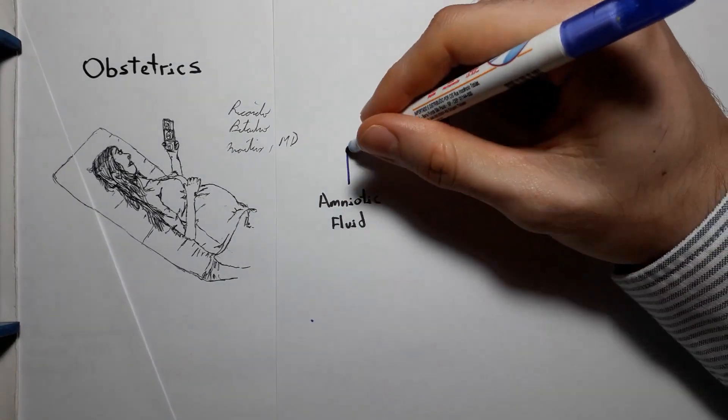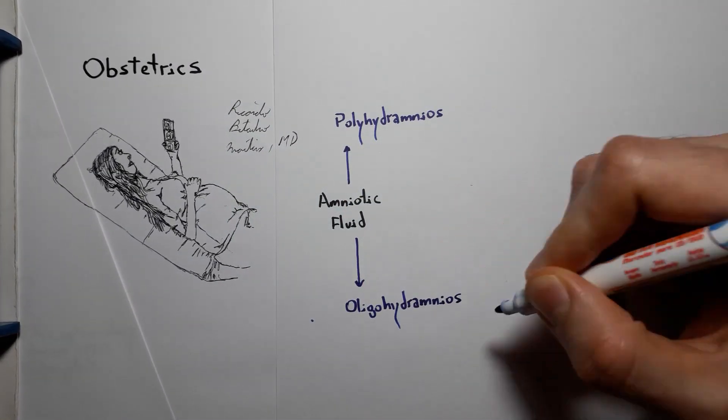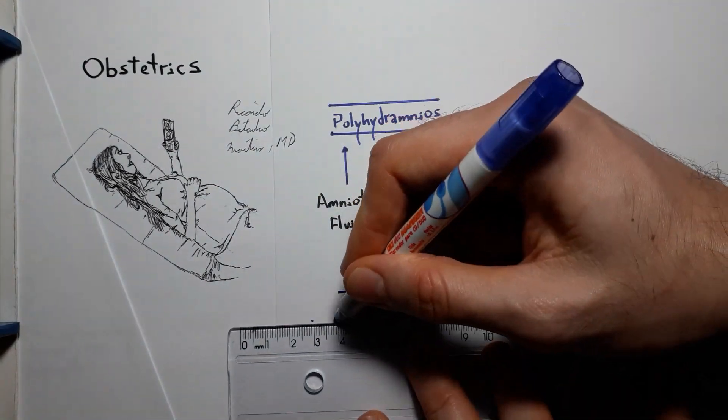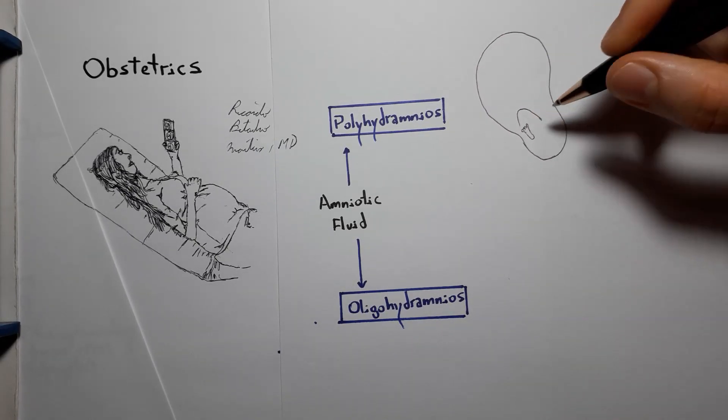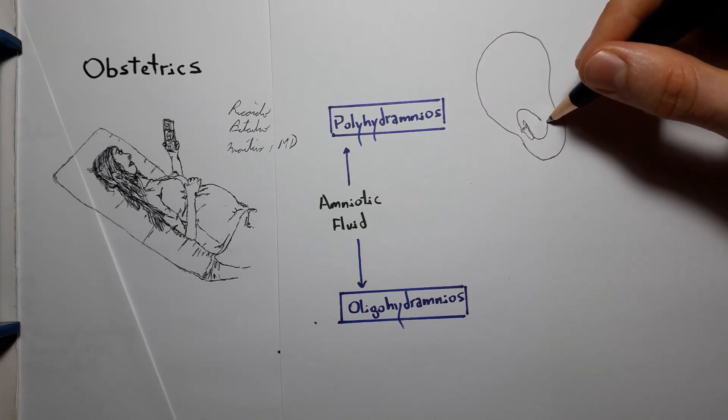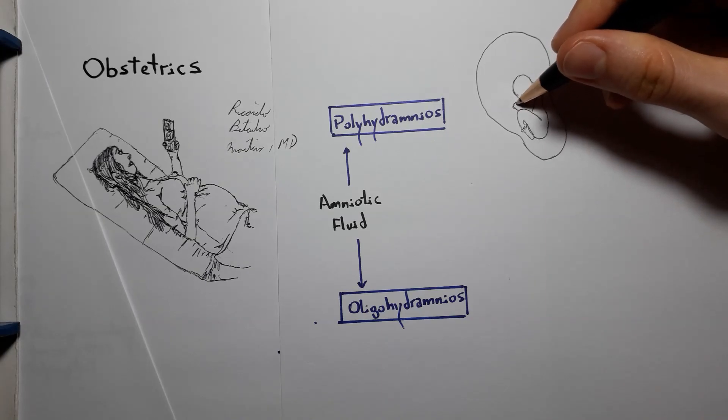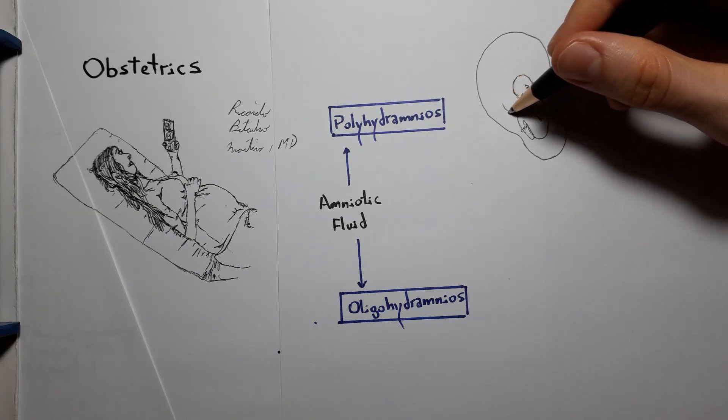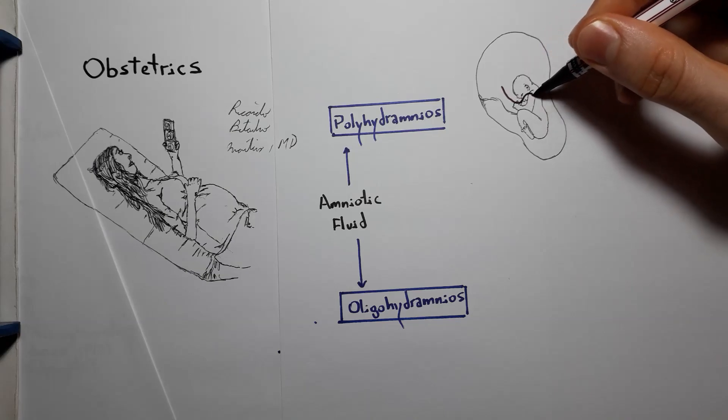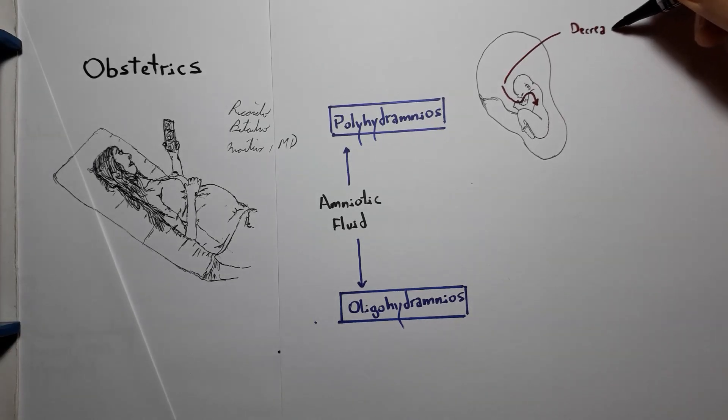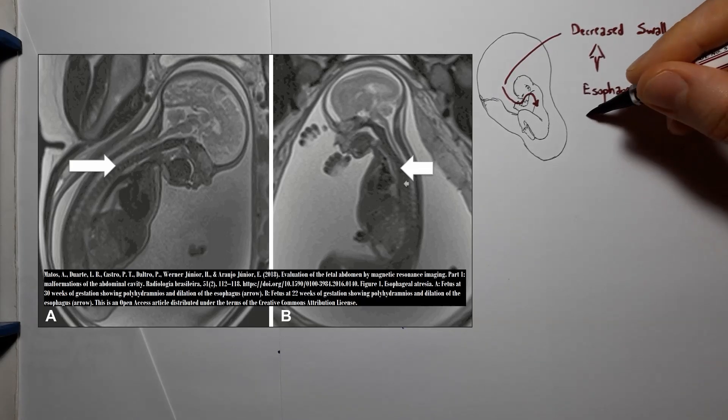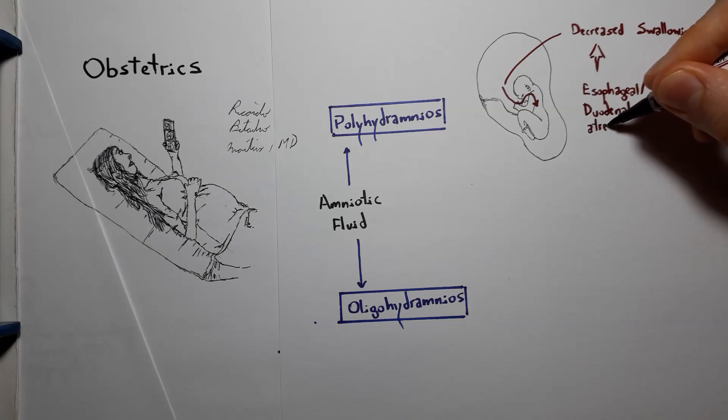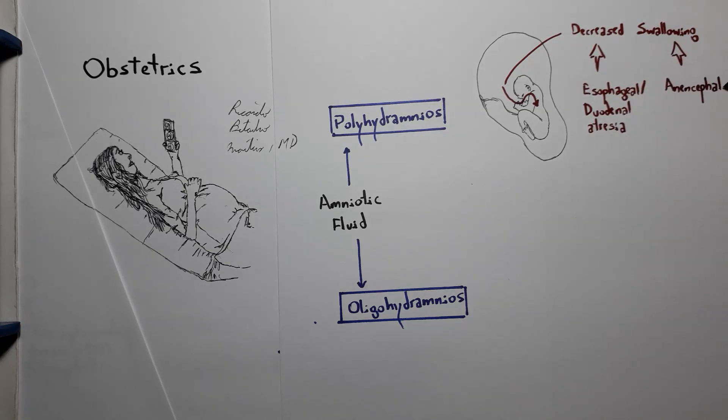Finally, concerning the amniotic fluid, we can think about polyhydramnios and oligohydramnios. Polyhydramnios is the excess of amniotic fluid. Since amniotic fluid is constantly excreted and swallowed by the fetus, excess amniotic fluid can be caused by anything that impedes swallowing, such as malformations of the gut, including esophageal and duodenal atresia, or by anencephaly, which causes the swallowing reflex to be absent.